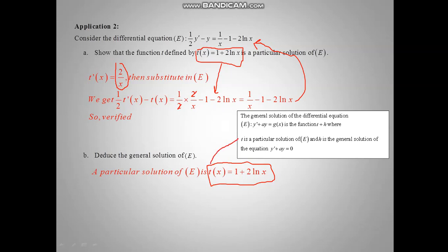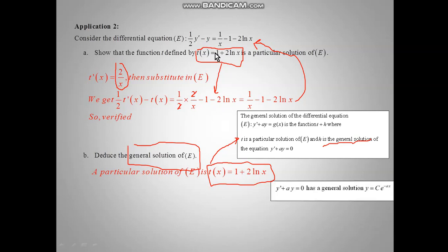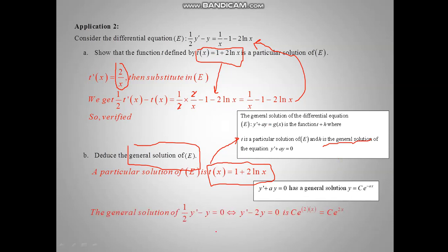To find the general solution of E, we still need to find the general solution of the reduced equation: one half y prime minus y equal to 0. The rule requires the coefficient of y prime to be 1, so we multiply by 2 to get y prime minus 2y equal to 0. Using the formula c e minus ax with a equal minus 2, the solution is c e to the 2x. This is H, the general solution of the reduced equation.